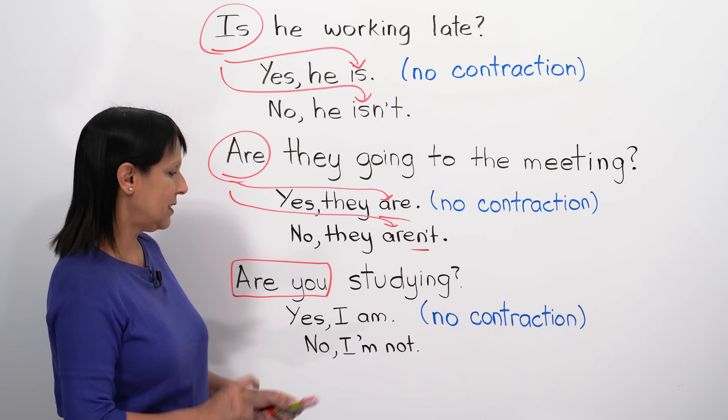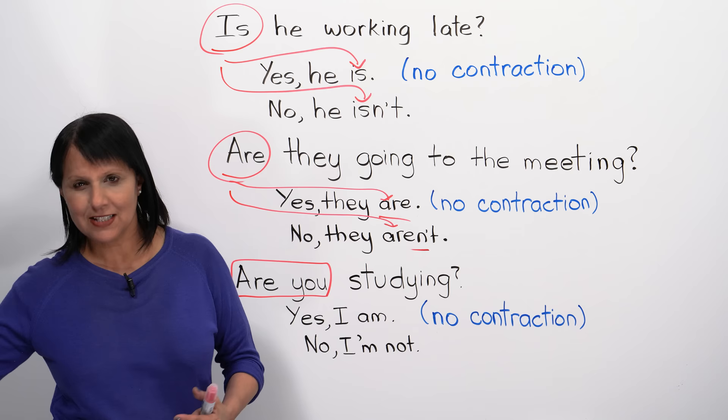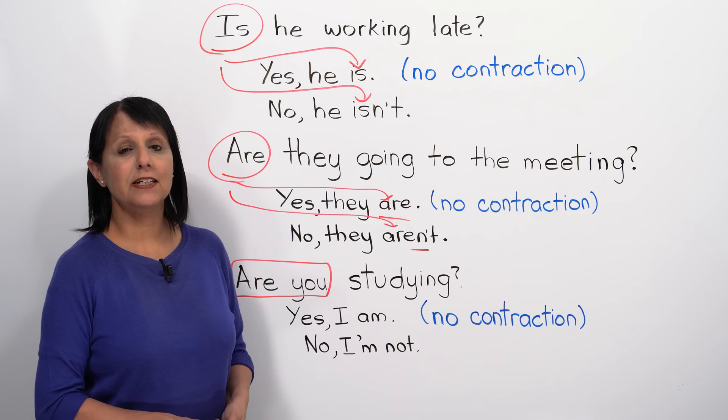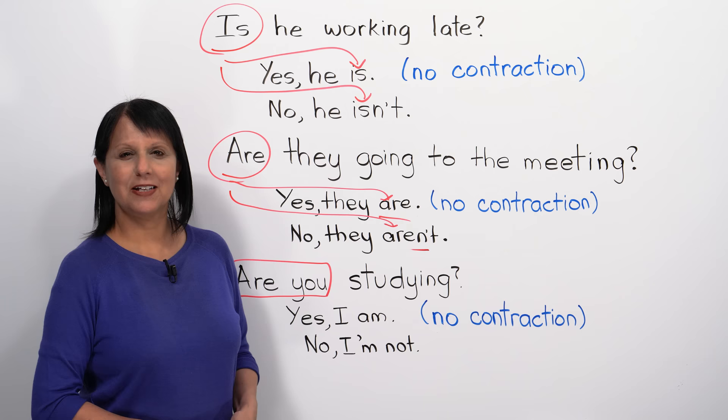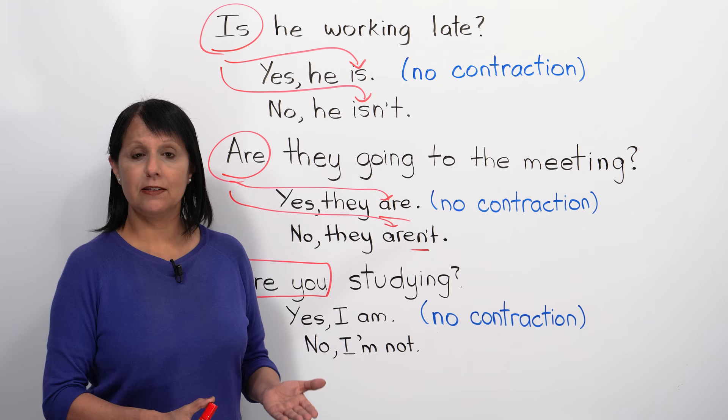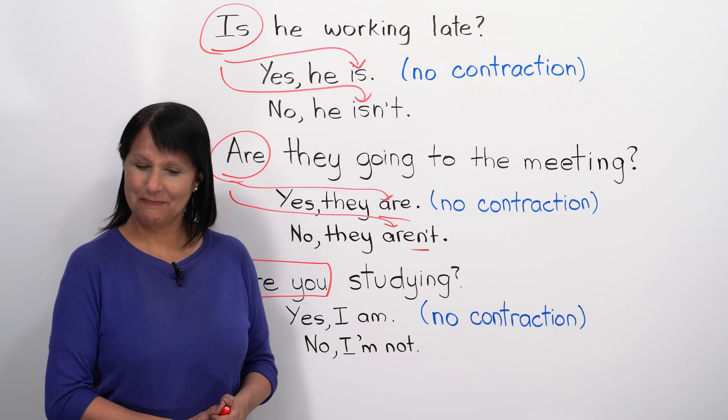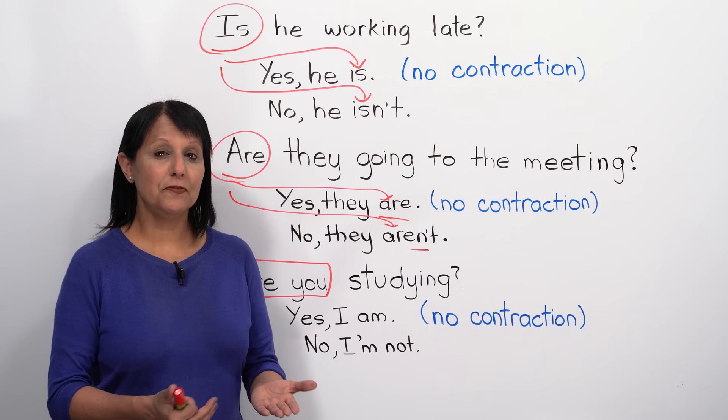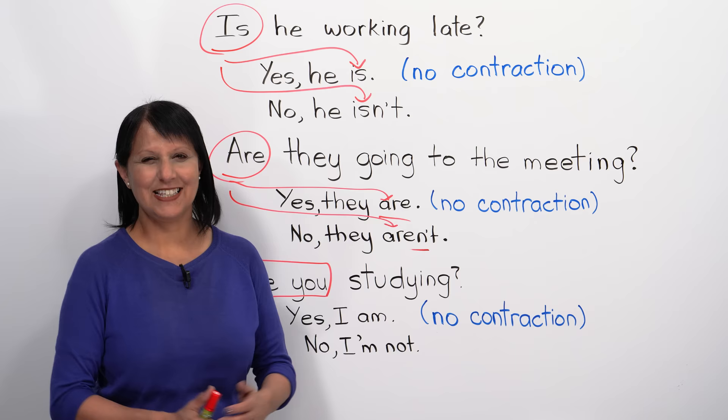It's a good thing to know these phrases: 'Yes, I am' / 'No, I'm not.' For example: Are you learning the present continuous tense? Yes, I am. Are you making progress in your English? Yes, I am. Are you feeling happy? Yes, I am! Now let's practice what you've been learning.